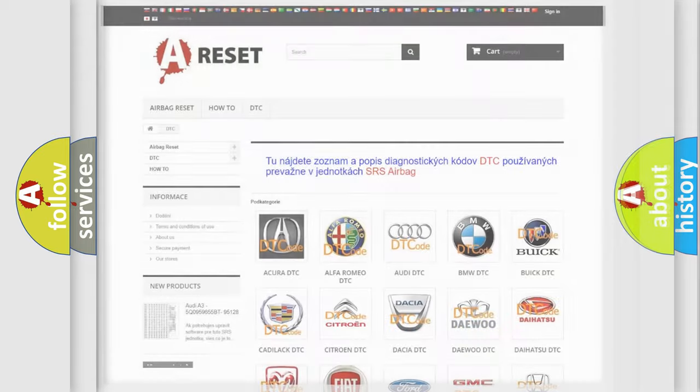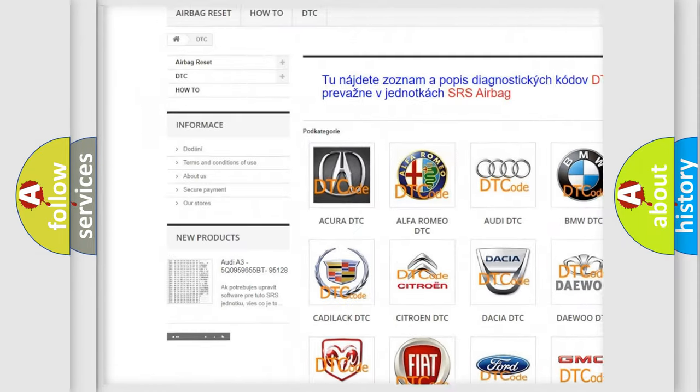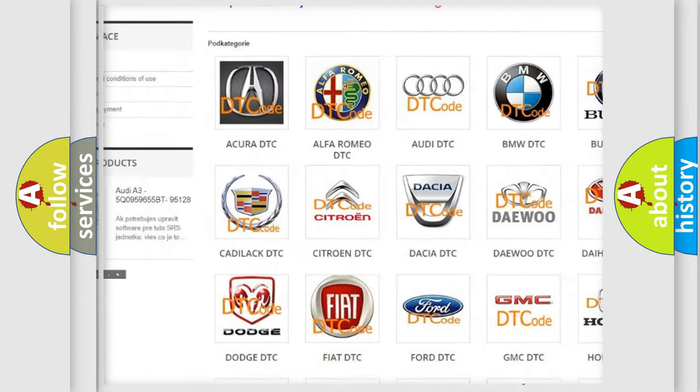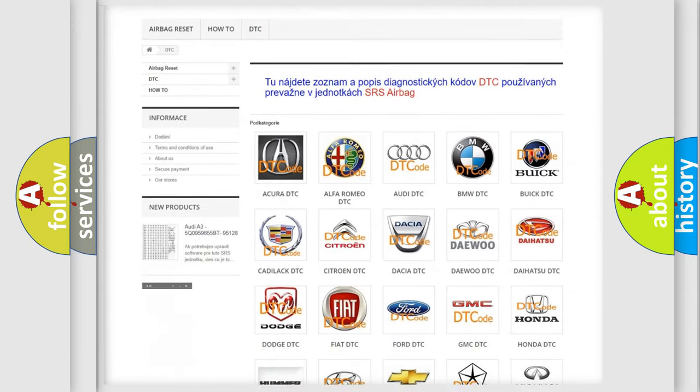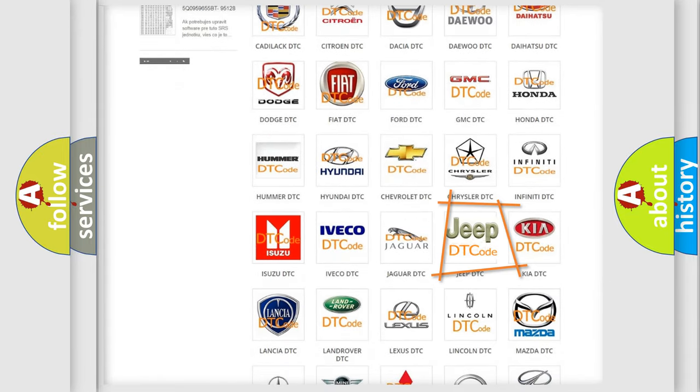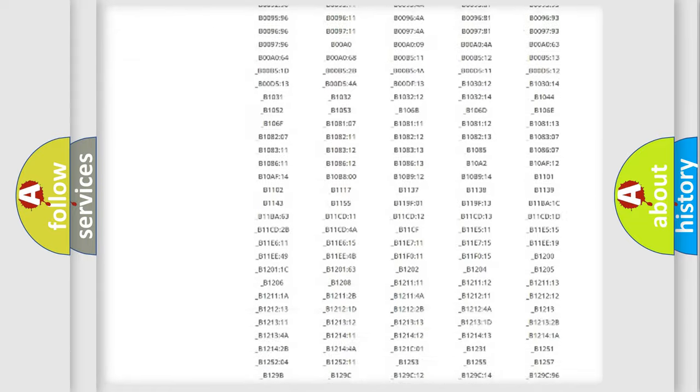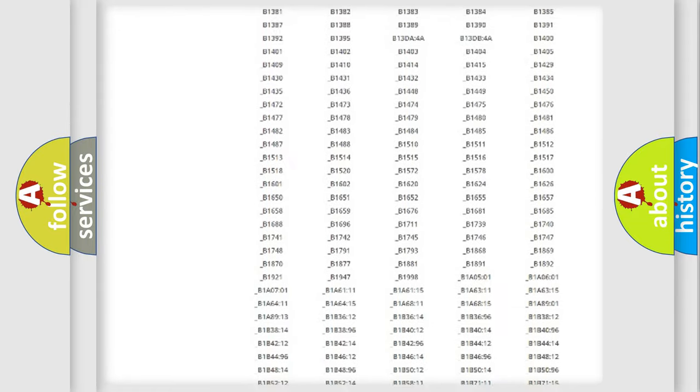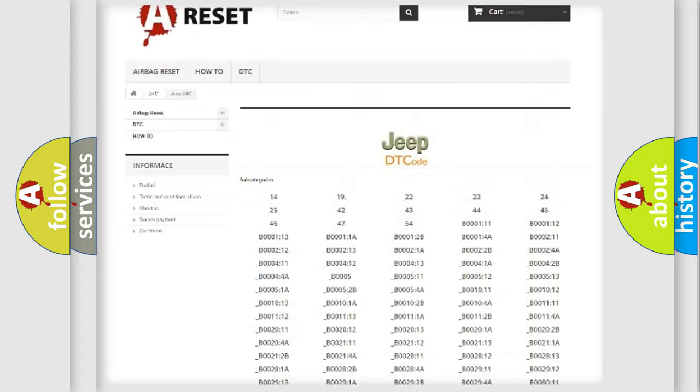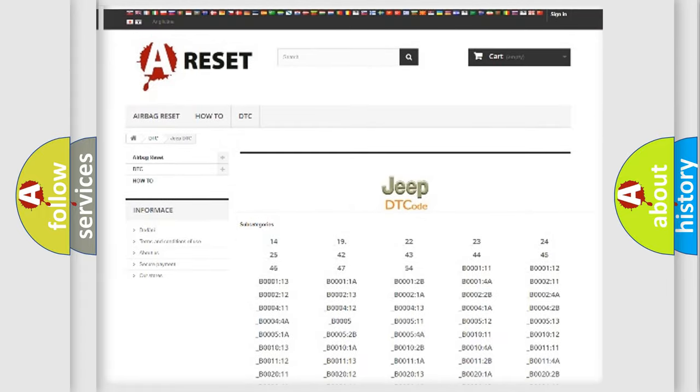Our website airbagreset.sk produces useful videos for you. You do not have to go through the OBD2 protocol anymore to know how to troubleshoot any car breakdown. You will find all the diagnostic codes that can be diagnosed in Jeep vehicles, and many other useful things.